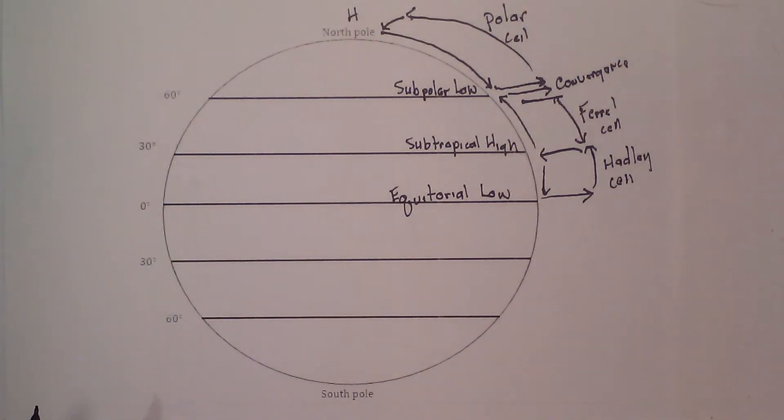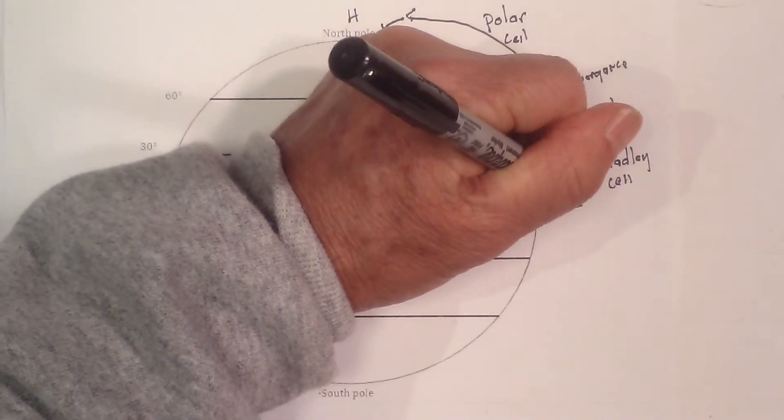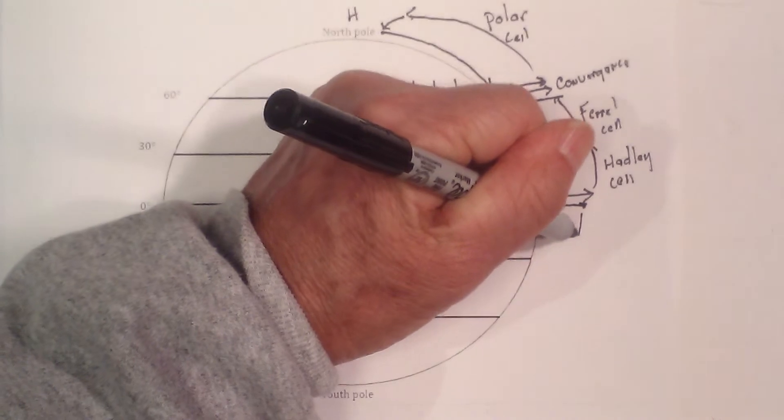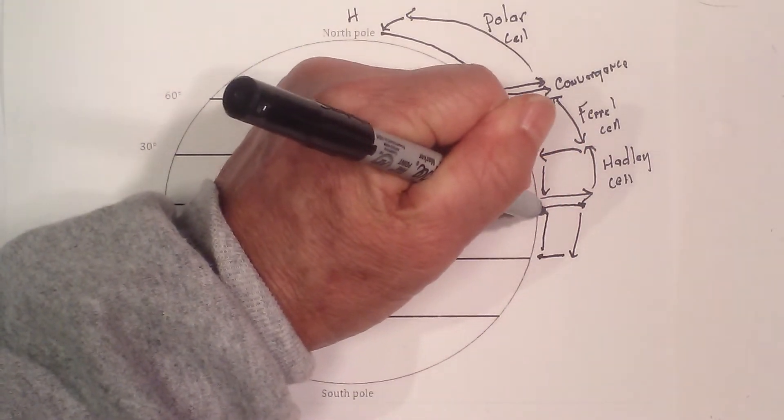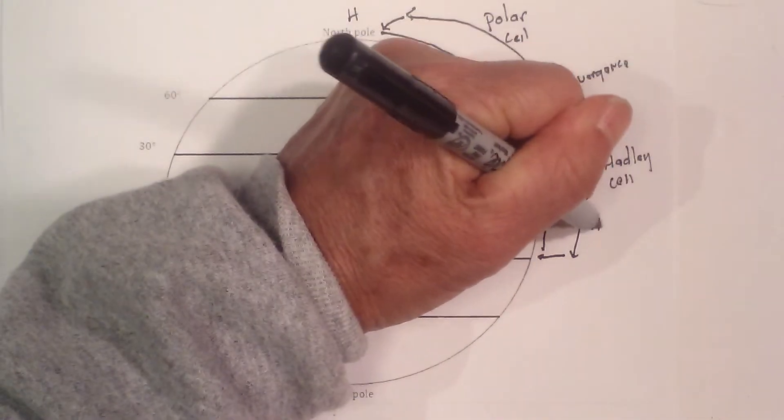Now the same thing happens in the south. Again, warm air rises, spreads out, begins to sink, and then makes a loop. That's the Hadley cell.